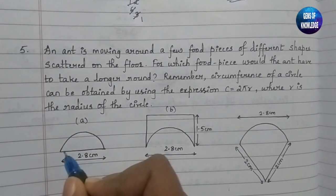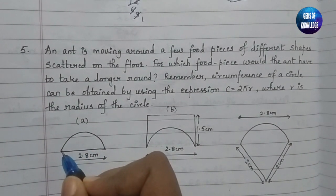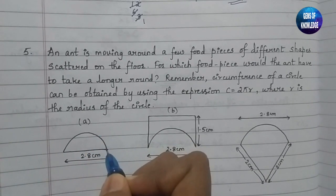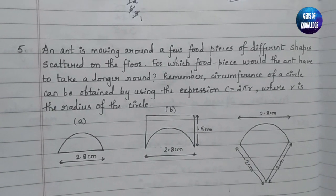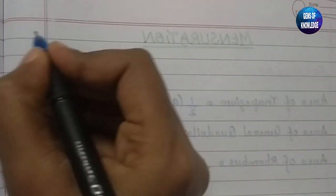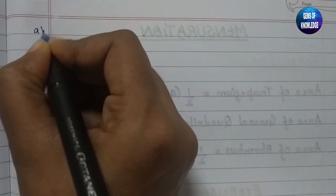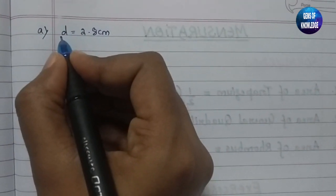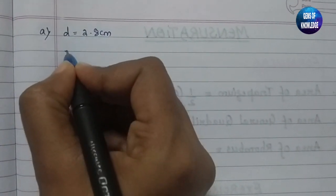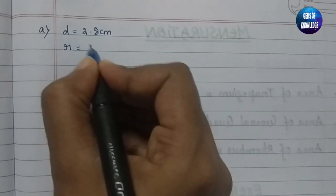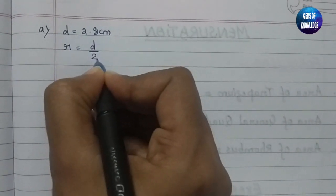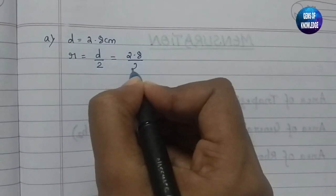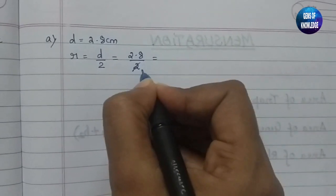For figure A, the complete diameter of the figure is given. The diameter D equals 2.8 cm. We need to find the perimeter of this curved surface. For figure A, D is given as 2.8 cm. The radius R is half the diameter, so R equals D divided by 2, which gives 1.4 cm.